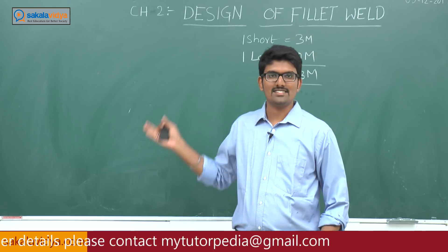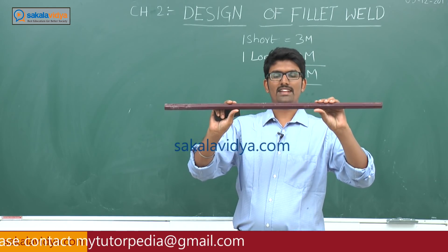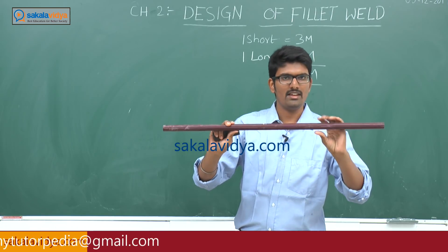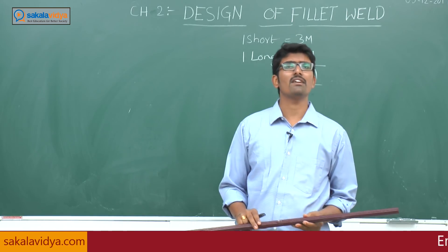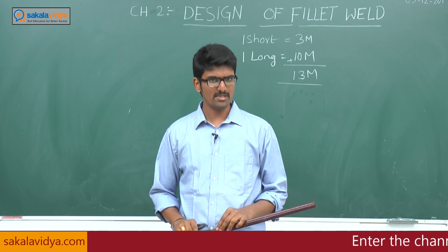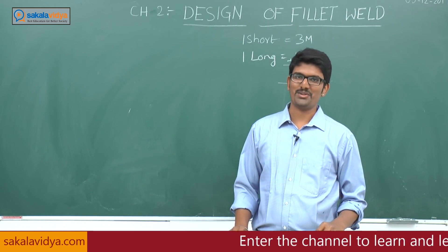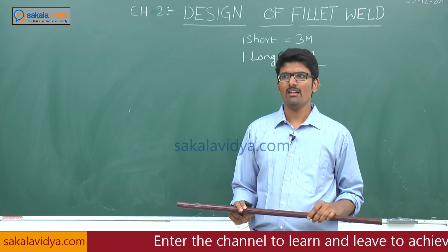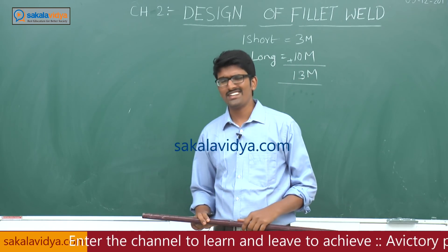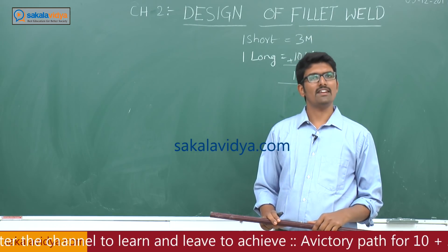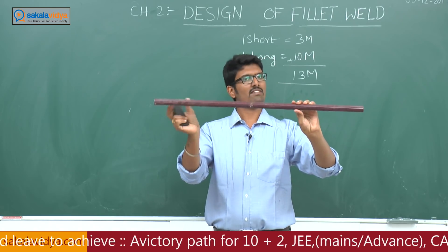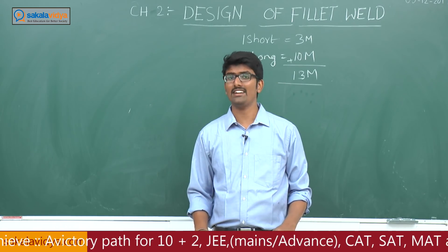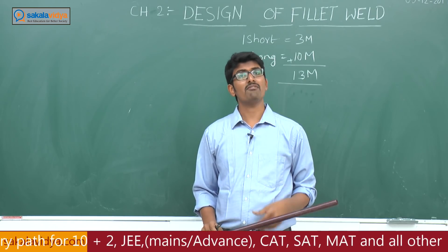To understand the concept of this lesson, let us take a small example. Consider connecting two metal rods together — is it possible to connect them by means of glue, gum, fevicol, or cement? No, the two metal rods cannot be connected by those means. We have to use other connectors such as welding, bolting, riveting, and pins. For hollow sections you can directly use welding.